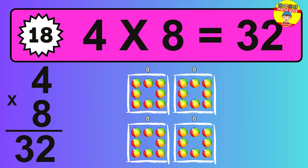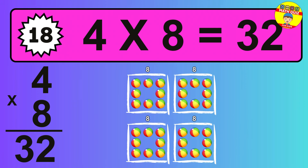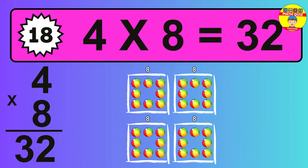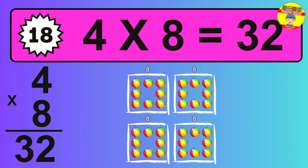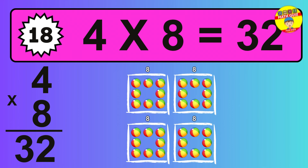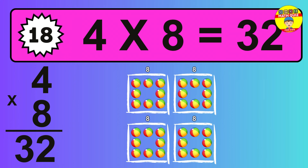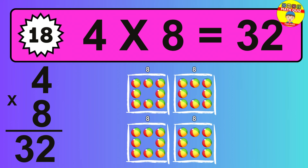Question 18. 4 times 8 equals what? The answer is 4 times 8 is 32. To calculate, we have 4 groups with 8 balls each one. So, how many balls do we have? 32 balls.